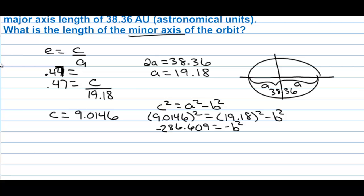Multiplying both sides by negative one and taking the square root, b equals approximately 16.930. Since b is from the center to the co-vertices, we multiply by 2 to get the full minor axis length: 33.859 astronomical units.